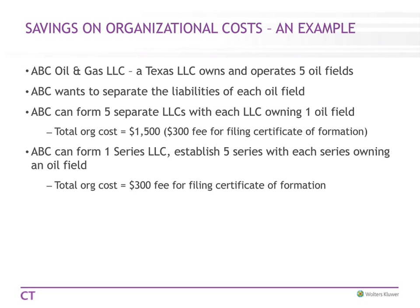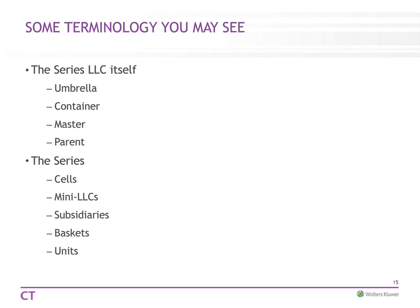These are some of the terminology used in different states. Different commentators and attorneys refer to it differently. The Series LLC can be called the master or the parent, showing it is the larger LLC itself that owns the series. The series themselves are sometimes called cells, subsidiaries, baskets, or units, depending on the commentator.